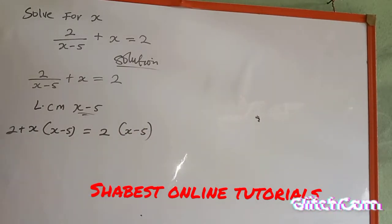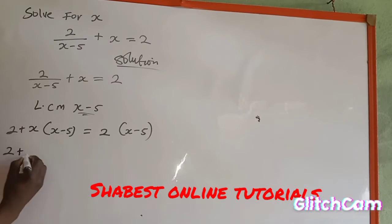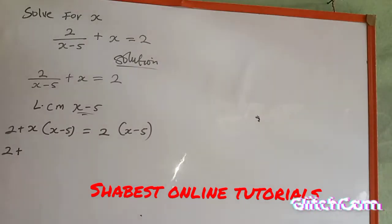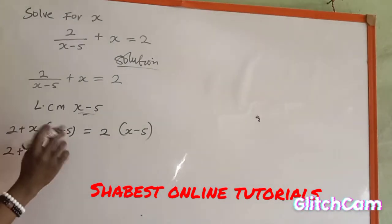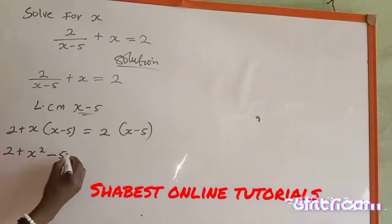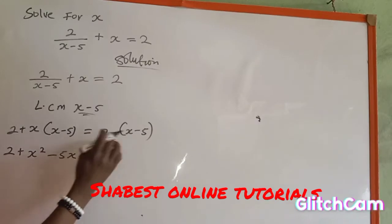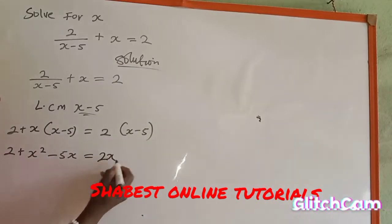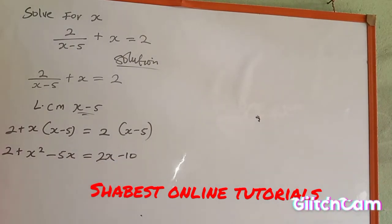Opening the bracket: 2 multiplied by s minus 5 gives 2s minus 10 on the right side. On the left, s multiplied by s gives s squared, and s multiplied by minus 5 gives minus 5s. So expanding fully: s squared minus 5s equals 2s minus 10.